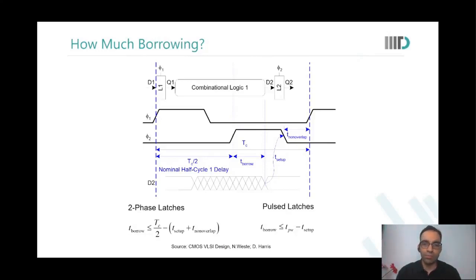How much can we borrow? We have to ensure that setup time from the falling edge of clock has to be met. How much can I borrow? In case of two-phase latches, I have to borrow like this. In case of pulse latches, it depends on the pulse width. If my pulse width is very small, then all this is all that I can borrow.